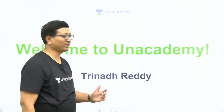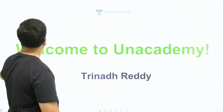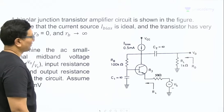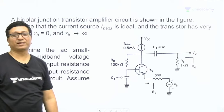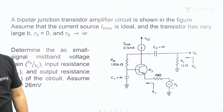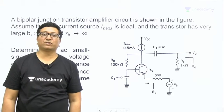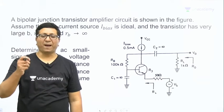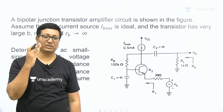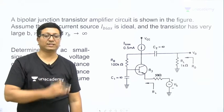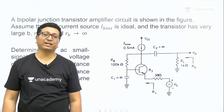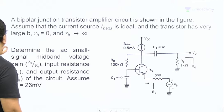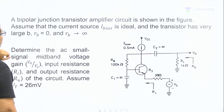Let us have a look at the question. An amplifier circuit is given and they are asking us to find the input impedance, output impedance, and voltage gain. Basically, for an amplifier, we always think of these three things to be calculated. Let us see this BJT — bipolar junction transistor.